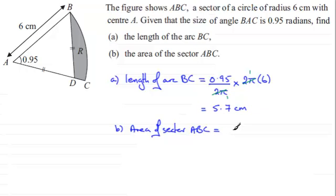And that fraction will again be the angle, 0.95, compared with or out of the amount of radians in one complete turn. So it's this fraction of the area of a circle, and the area of a circle is πr². And the radius in this example is 6, so we've got π times 6 squared.